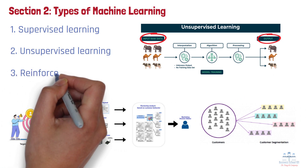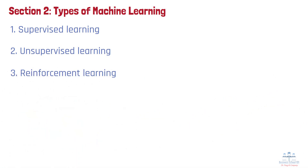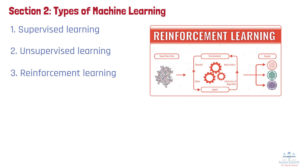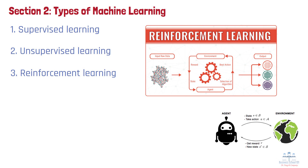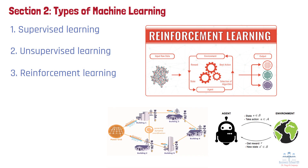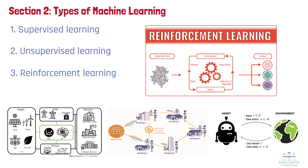Number 3: Reinforcement Learning. Reinforcement learning is a learning paradigm where an agent learns to make decisions by performing actions and receiving feedback in the form of rewards or penalties. The goal is to maximize cumulative rewards over time. A real-world example can be found in the energy sector, where companies use reinforcement learning to optimize power grid management. The AI system learns to balance supply and demand efficiently by adjusting controls in response to real-time data, thereby reducing operational costs and improving reliability.